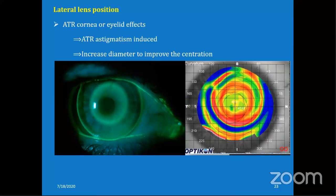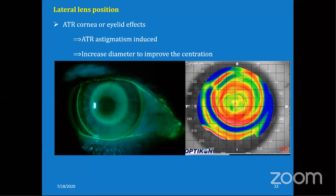Lateral lens position occurs when the lens becomes laterally displaced if your cornea has against-the-rule astigmatism and also due to tonicity of the eyelid. It will induce against-the-rule astigmatism. It is the most difficult fitting anomaly to correct because it has various causes - it may be due to excessive sagittal depth or too shallow a sagittal depth. It is very difficult to correct. To improve centration, increase the diameter of the contact lens.